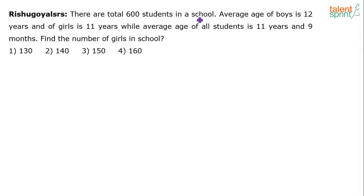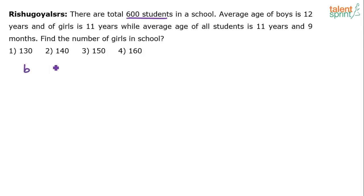There are total 600 students in a school. The average age of boys is 12 years and of girls is 11 years, while the average age of all students is 11 years and 9 months. Find the number of girls in the school. Total 600 students — let's assume the number of boys are b and the number of girls are g, so b plus g equals 600 (equation one).